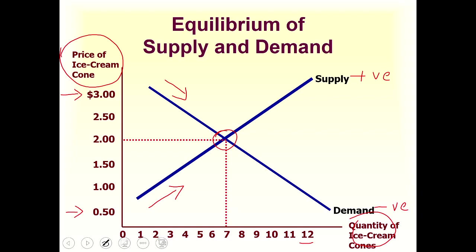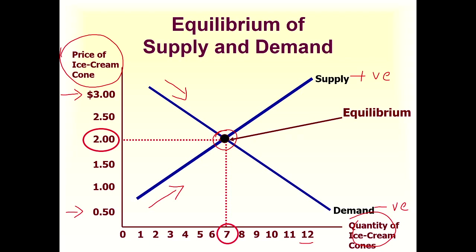You can see there is a point where demand and supply meet. This point is called the equilibrium — where the demand line and the supply line cross each other. Here we have the equilibrium at price 2 and quantity 7. This means that in the market the supplier will supply 7 units of ice cream at price 2. This is the market equilibrium.